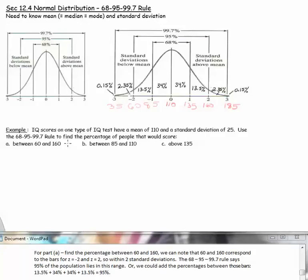For part A, find the percentage between 60 and 160. If we mark those bars, those correspond to the bars between z equals negative 2 and z equals 2, in other words, within two standard deviations. The 68-95-99.7 rule says that the percentage in that region is 95%. An alternate way to do it is to add all these percentages between these bars: 13.5% plus 34% plus 34% plus 13.5%, which also equals 95%.